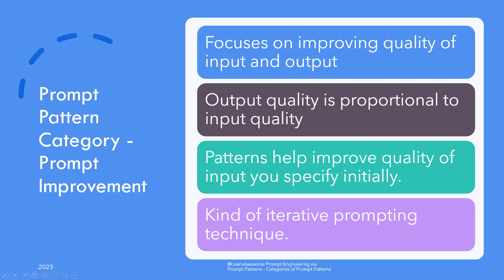Prompt improvement category focuses on improving the quality of input and output, and remember the output quality is proportional to input quality. Various patterns in this category equip you to improve the quality of input you specify in the initial prompt. They are a kind of iterative prompting technique where ChatGPT actively helps you come up with a better prompt than before, so it can generate a better output than before.